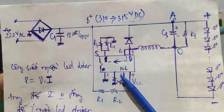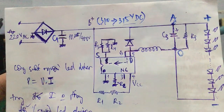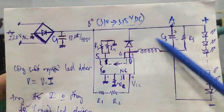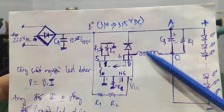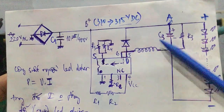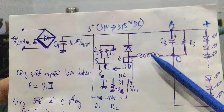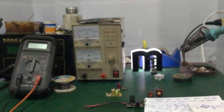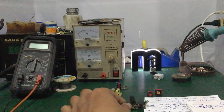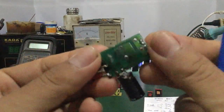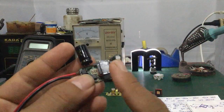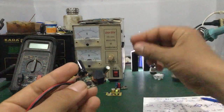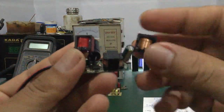Đây là IC nguồn LED driver. Trong video này mình sẽ hướng dẫn cách thay đổi điện áp ngõ ra bằng cách thay đổi giá trị cuộn cảm. Mình có một bộ nguồn LED driver, nó có sẵn cuộn cảm dây của nó. Mình sẽ đo tổng trở, rồi thay đổi giá trị cuộn cảm bằng 2 cuộn cảm khác nhau.